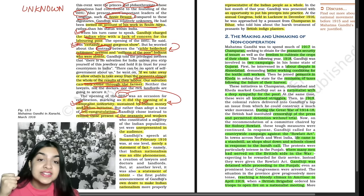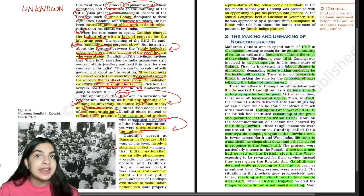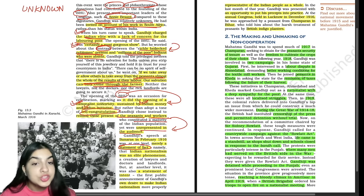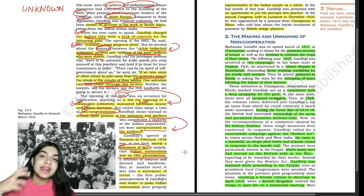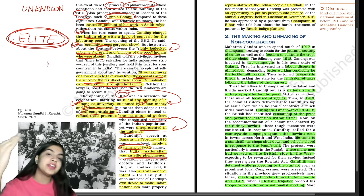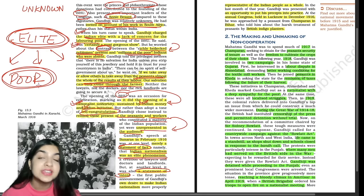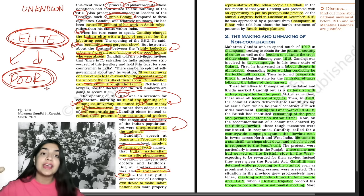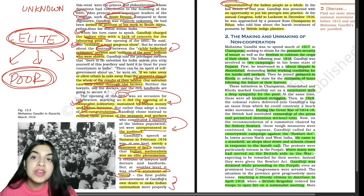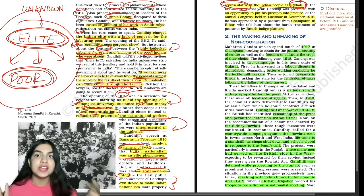Gandhi ji pointed out that the peasants and workers who are a majority of the Indian population are not even represented in the audience. This made everyone think — why is this so, and we need to change it. His speech was both a statement of fact — that Indian nationalism was an elite phenomenon — and a statement of intent: that he wanted to broaden it so that the freedom struggle reaches poor people too. It was Gandhi ji's own desire to make Indian nationalism more representative of Indian people as a whole.